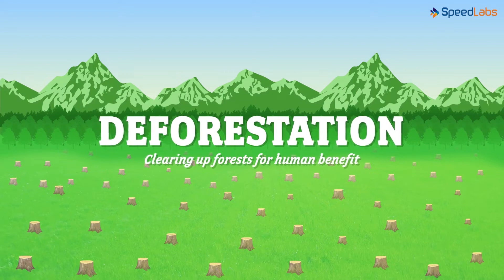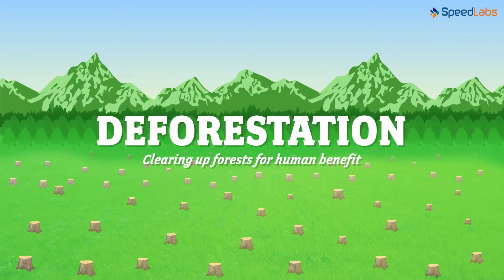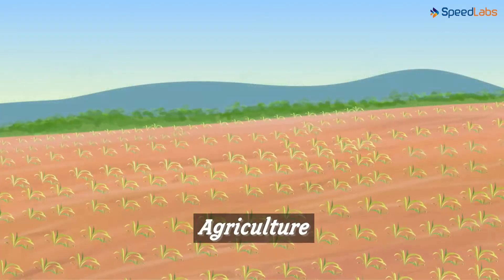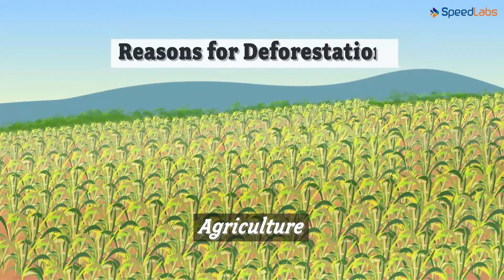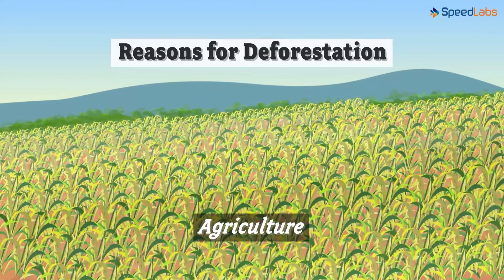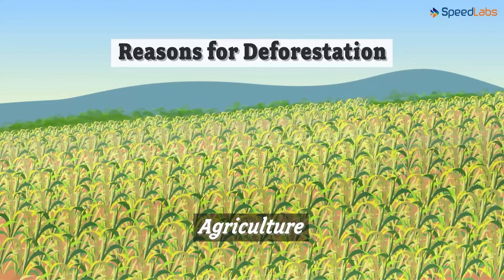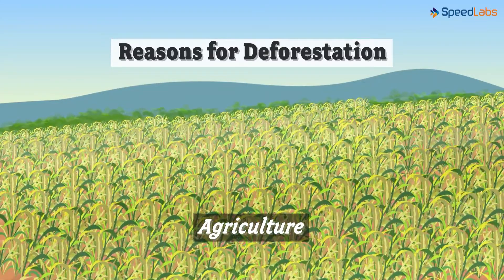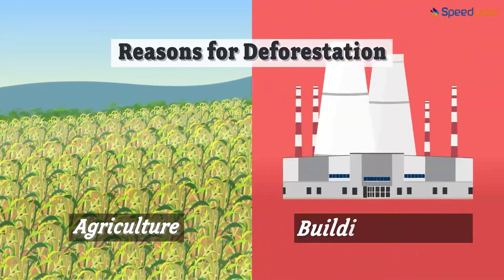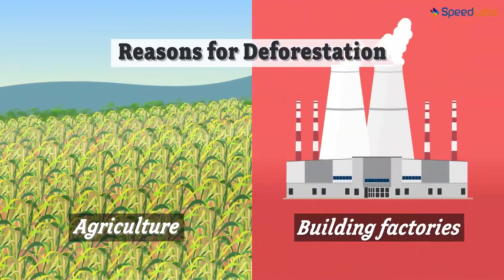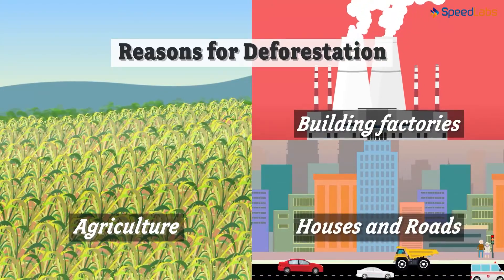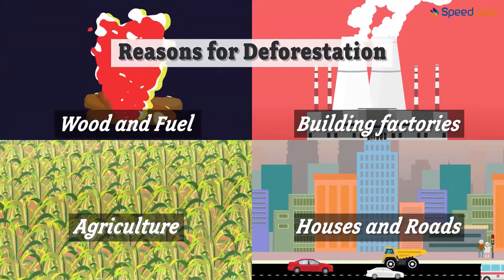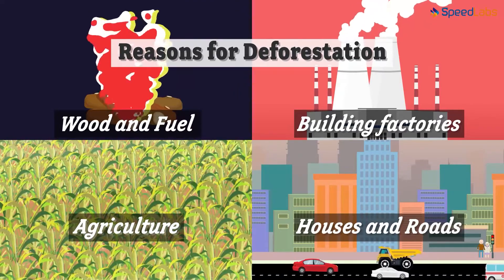Can you name a few reasons why man clears up forest lands? Agriculture — we clear land to bring more land under cultivation. We also clear forests for building factories, houses, and roads. And what about cutting trees for wooden fuel? Isn't that another reason?